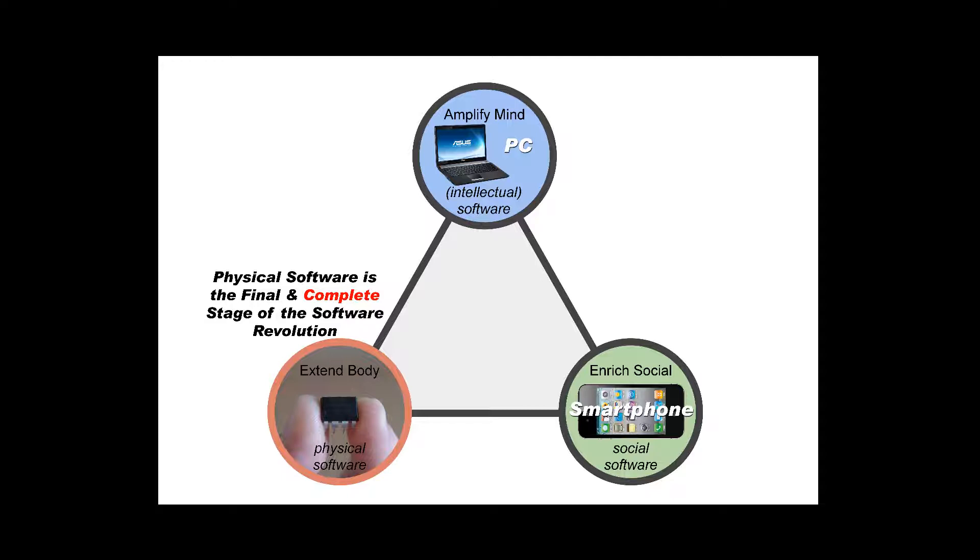And what we believe to be the most important thing here is that these three kinds of software can interact. Software in the PC interacting with the social software in the smartphone and interacting together with physical software. In this sense, physical software is the third, final, and completing stage of the software revolution started with the PC.